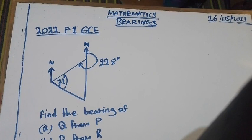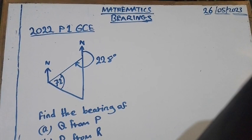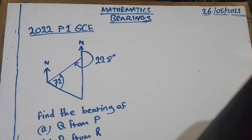Good morning. 2022 paper 1 GCE. Question on bearings. The question goes as follows. In the following diagram, P, Q and R are the three points on the level ground.